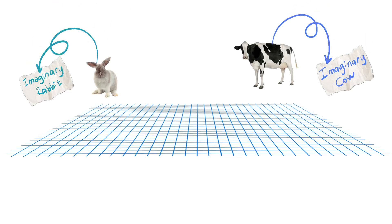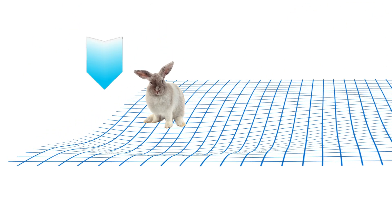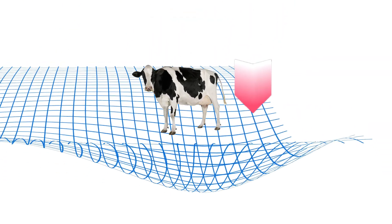Let's imagine a rabbit and a cow. While a rabbit is only able to bend a little, a cow would form a huge bend in spacetime.